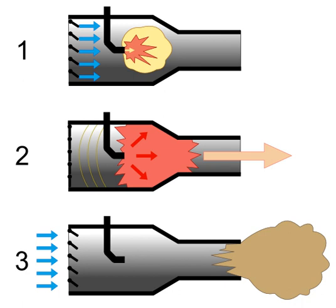One notable line of research of pulsejet engines includes the pulse detonation engine, which involves repeated detonations in the engine, and which can potentially give high compression and reasonably good efficiency.